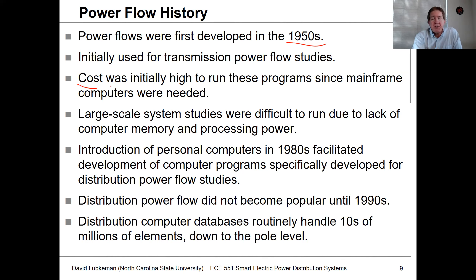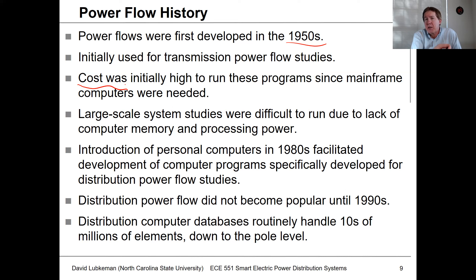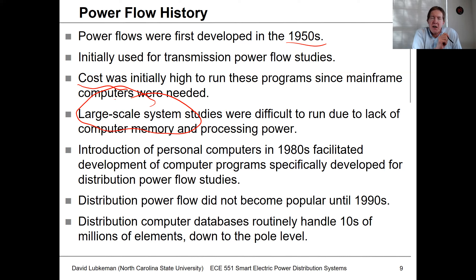The cost for running these first power flow programs was really high because initially utilities didn't even own their own computers. They had to go to service centers — utilities would fly their engineers to mainframe computer centers in cities like Chicago or New York to run their power flows. Another hindrance was that we couldn't run large-scale system studies early on because computer memory and processing power were relatively expensive, so we always worked with reduced system models.